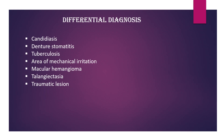Continuing differential diagnosis: 6. Macular hemangioma: lesions blanch on pressure. 7. Telangiectasia: characteristic appearance seen on the soft palate. 8. Traumatic lesion: the cause can be identified. These are the differential diagnoses of erythroplakia.